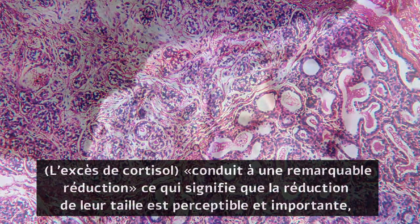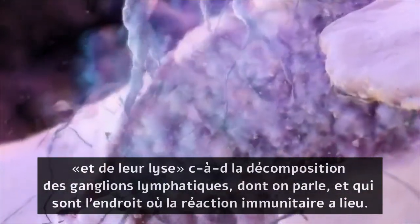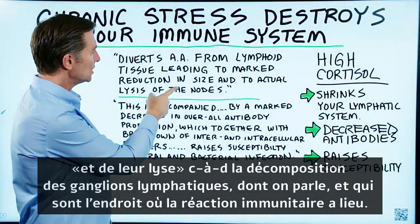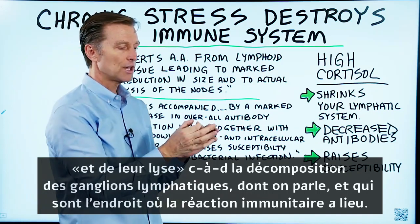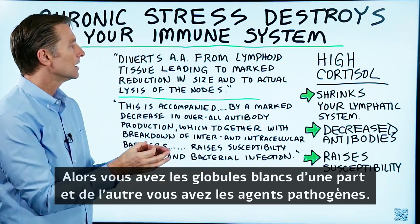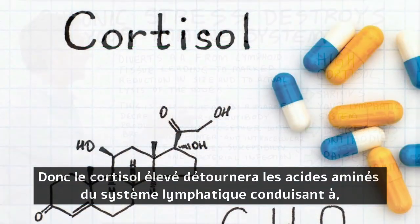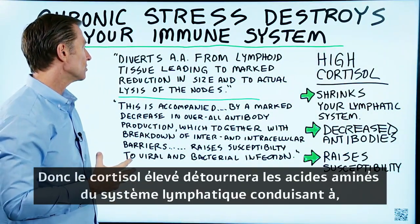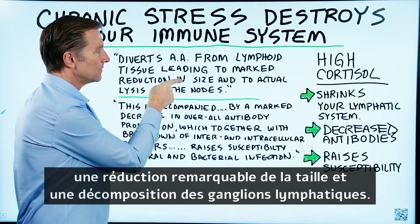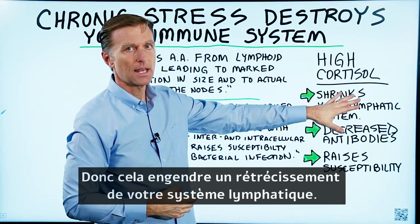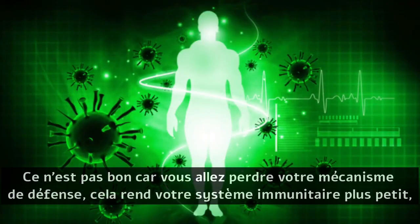So 'marked' means noticeable or prominent reduction in size, and 'lysis' means breakdown of the nodes — the lymph nodes. Lymph nodes are the location where the immune reaction takes place; you have white blood cells in there along with the pathogen. So high cortisol will divert amino acids from the lymphatic system, leading to a noticeable reduction in size and actual breakdown of the lymph nodes. Basically, it shrinks your lymphatic system, and that's not good because you lose your defense mechanism — it makes your immune system smaller.